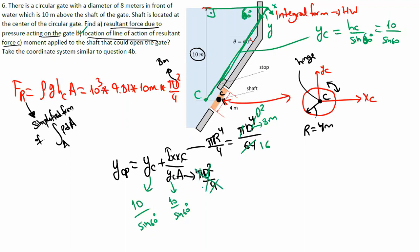So ycp is found. If you've done the calculations you can tell me the values. Now comes the last part: find the moment applied to the shaft that could open the gate.